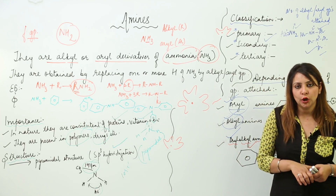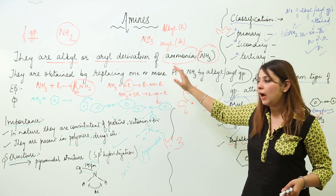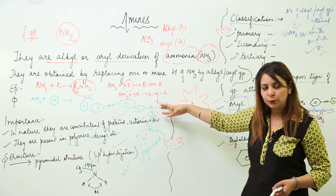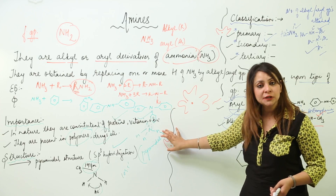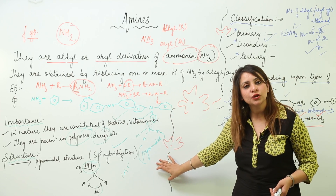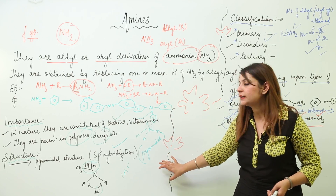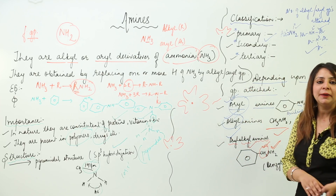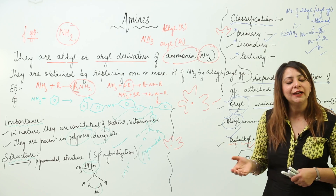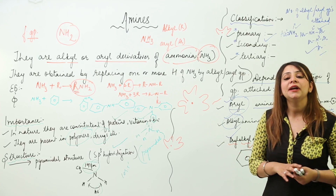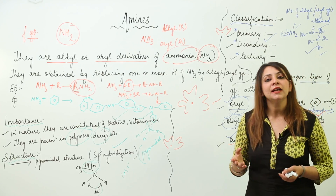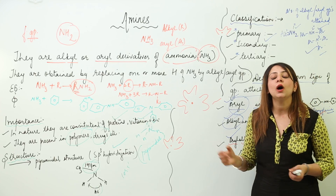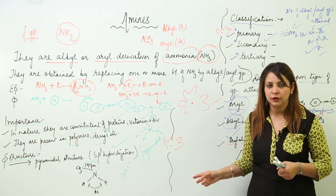So that was a basic introduction to amines — what amines are, how derivatives of ammonia are obtained by replacing H with alkyl or aryl groups, the hybridization of nitrogen, and the types of amines based on number and type of groups. Now we are going to start with the preparation of amines.